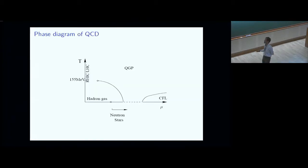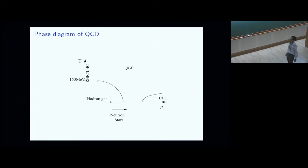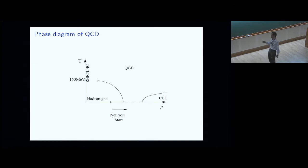Usually when we talk about the QCD phase diagram, we talk about studying it as a function of densities and temperatures. The chemical potential axis represents going to higher and higher baryon densities. The other axis is temperature, so going along this direction is increasing the temperature. We know a lot about how QCD behaves when you increase the temperature. We know that at low temperatures you have a gas of hadrons. When you heat it, you get a denser gas, and eventually if the temperature is much larger than lambda QCD, you would enter a phase where you have quarks and gluons — that's the quark-gluon plasma.